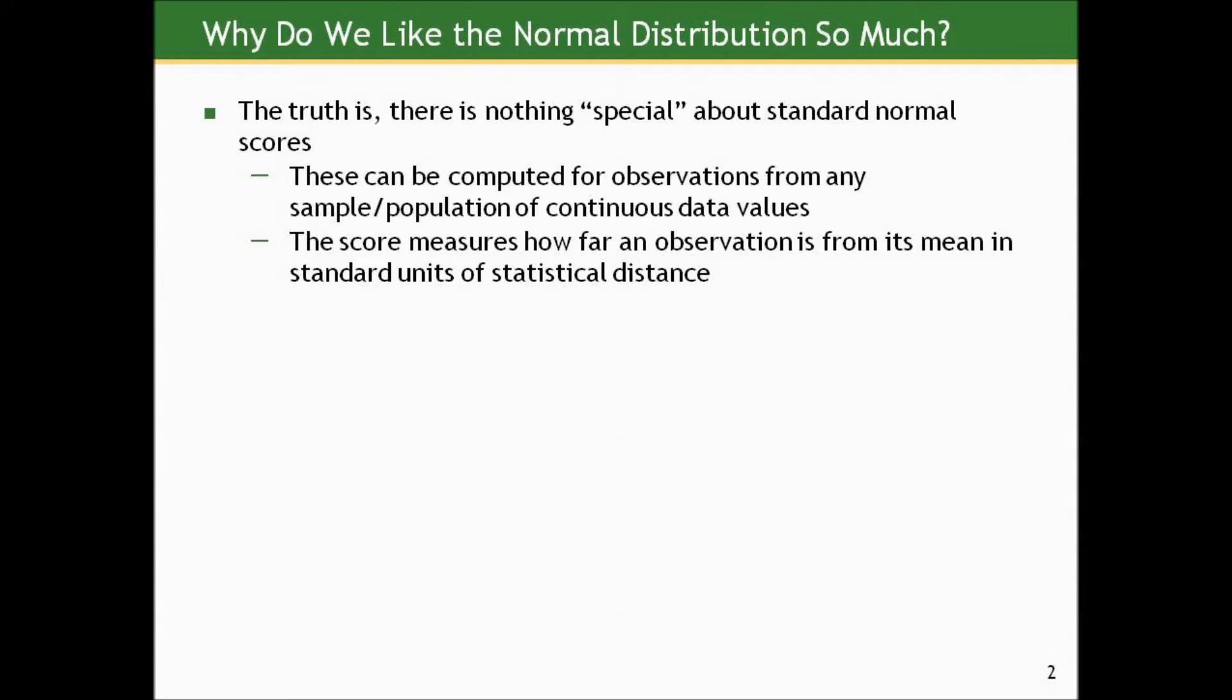In truth, there's really nothing special about standard normal scores. We can compute them for any data, and they're really nothing more than measuring how far an observation is from its mean in standard units of statistical difference, in standard deviations. We can do this for any data, and it is a recognizable metric, a distance.